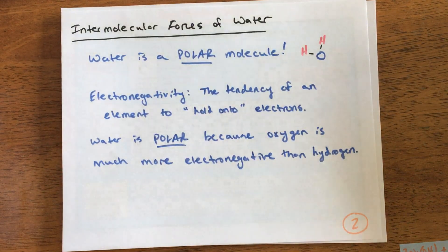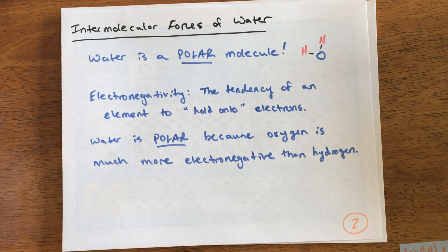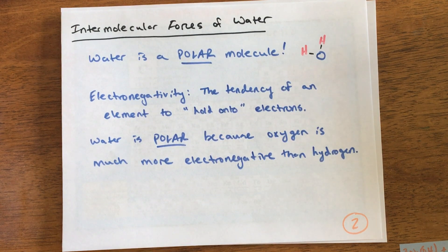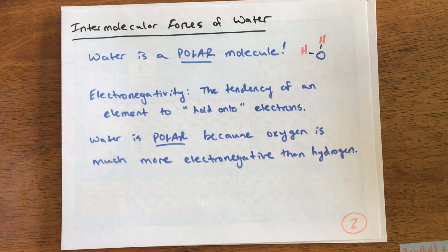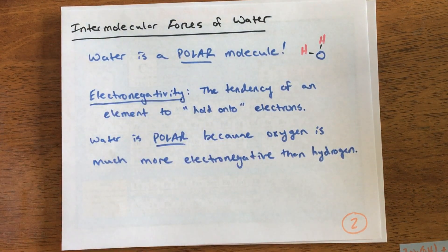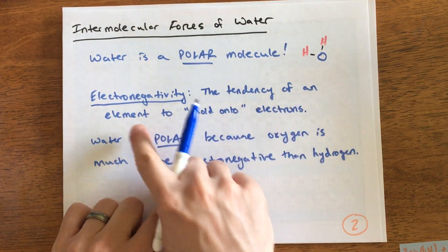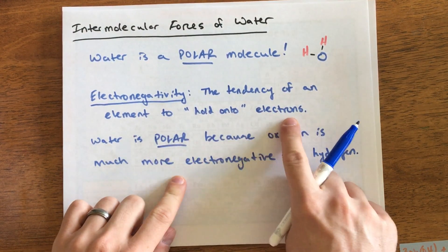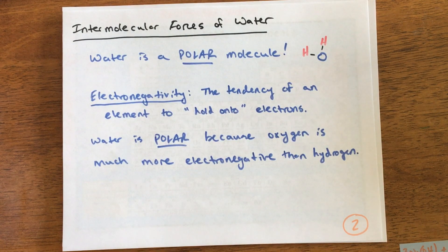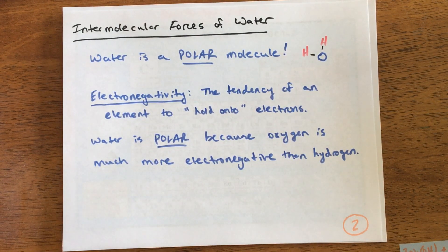Let's talk about water. Water is a polar molecule, so we need to explain what that means. There's something called electronegativity—this is a really big deal in chemistry and helps explain why some atoms and elements behave the way they do. This is the tendency of an element to hold on to electrons. Basically, an element that's really electronegative will hog electrons and hold on to them.